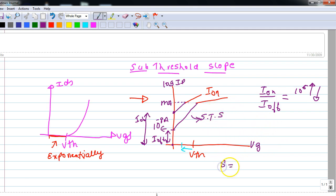Mathematically, the sub-threshold slope is given by 60 into 1 plus Cd divided by Cox, where Cd is the depletion capacitance and Cox is the gate capacitance per unit area.